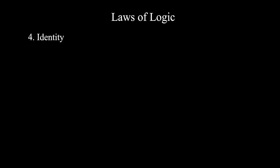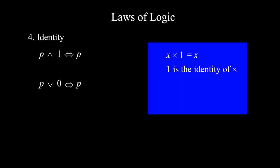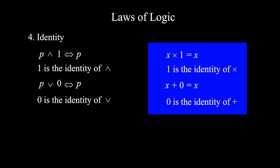Number four, identity. p and 1 is equivalent to p. p or 0 is equivalent to p. Here you can associate AND with multiplication and OR with addition. x times 1 is always x. 1 is the identity of multiplication. True is the identity of conjunction. x plus 0 is always x. 0 is the identity of addition. False is the identity of disjunction.